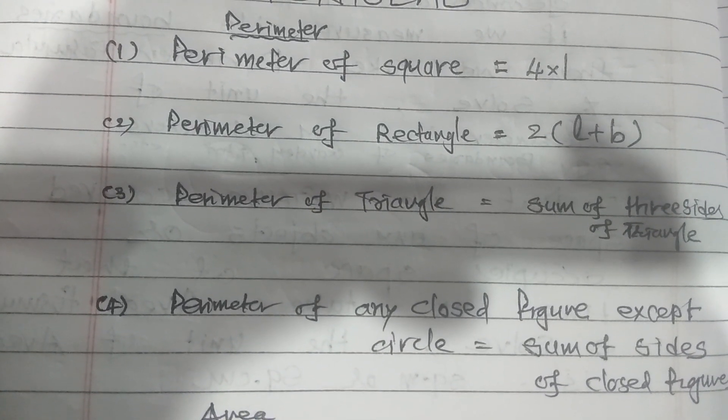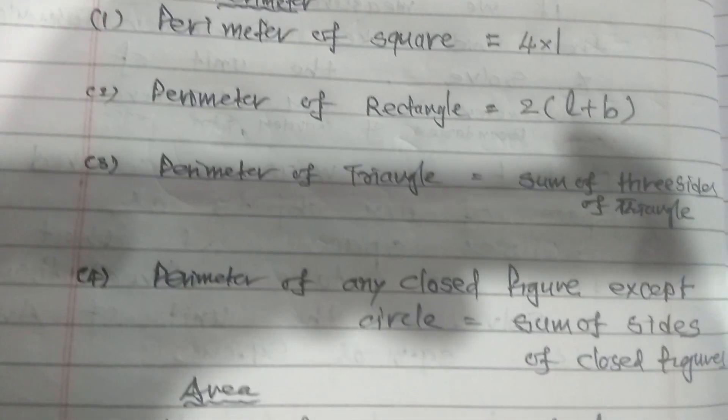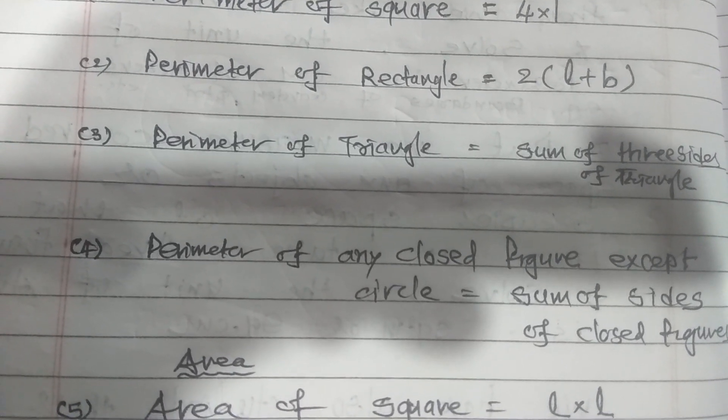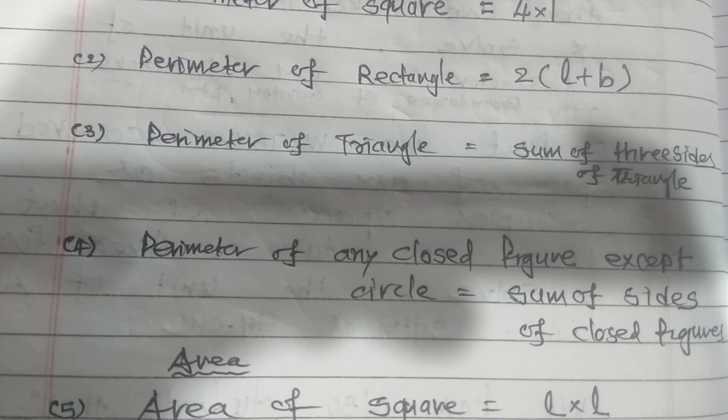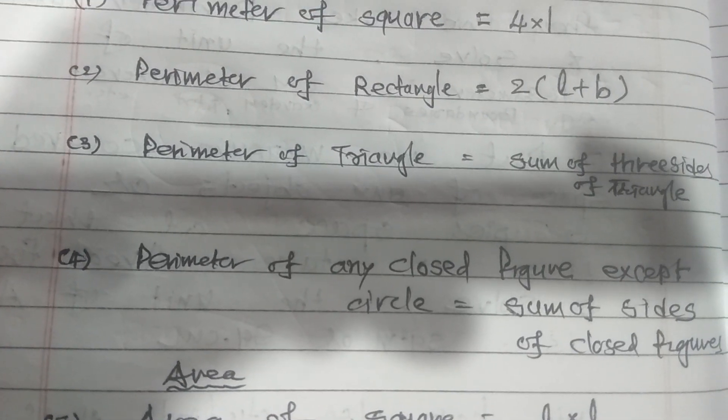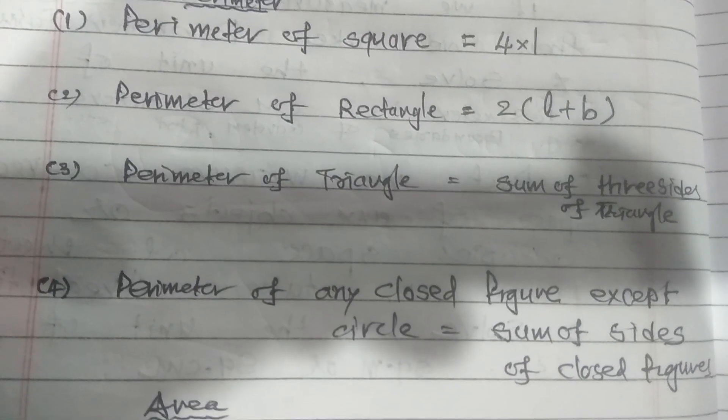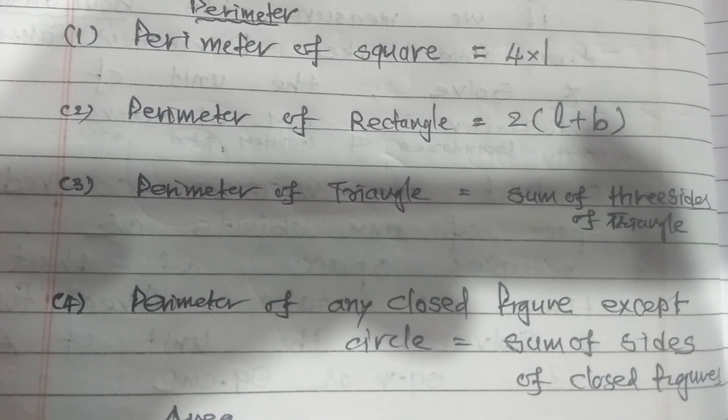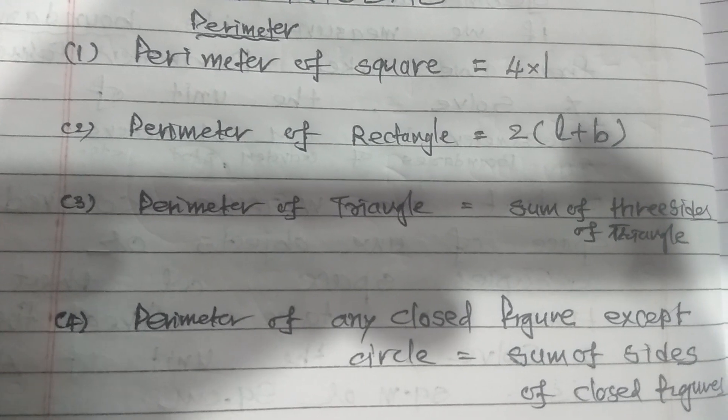Perimeter of rectangle is equal to 2 multiplied by L plus B. Perimeter of triangle means sum of the three sides of the triangle. Here we write perimeter of any closed figure except circle, so what do we have to do? Sum of the sides of the closed figure. You have to add the sides of the closed figure.